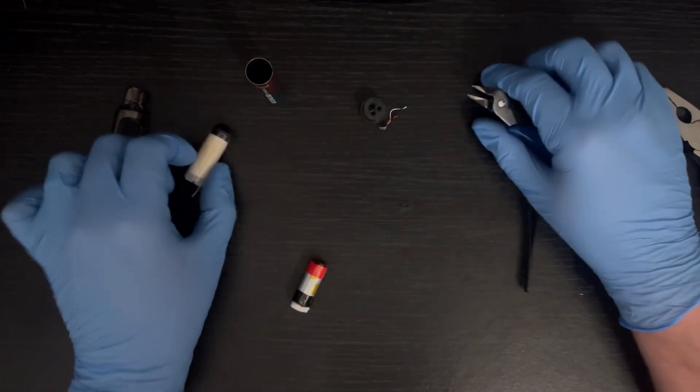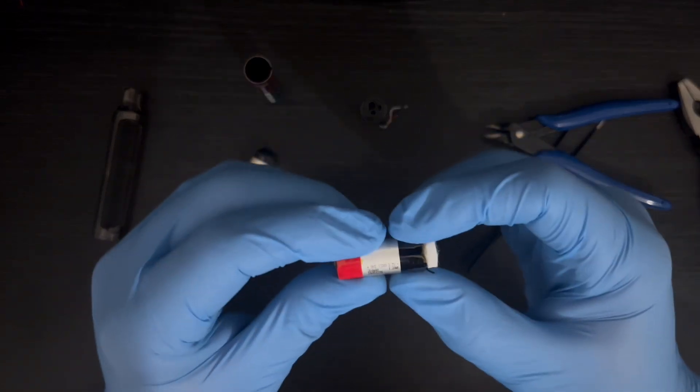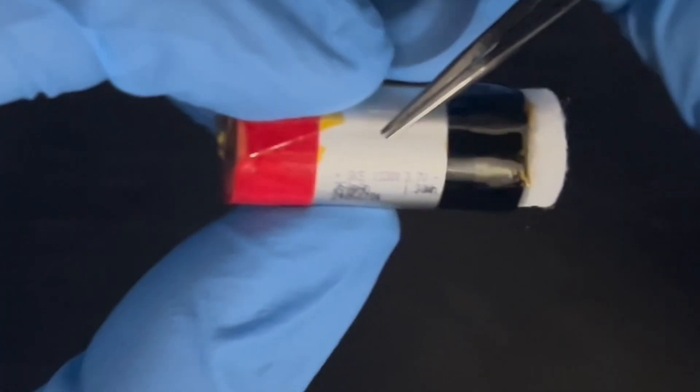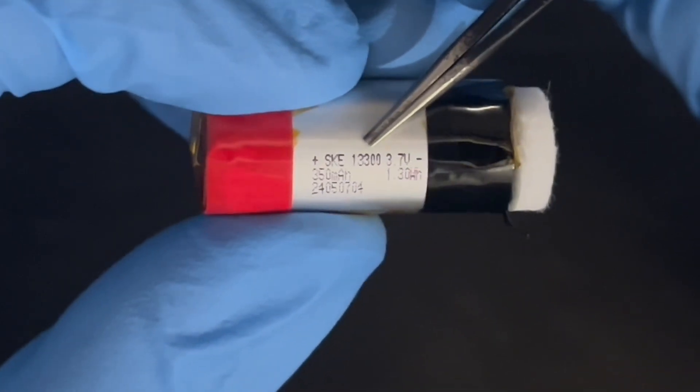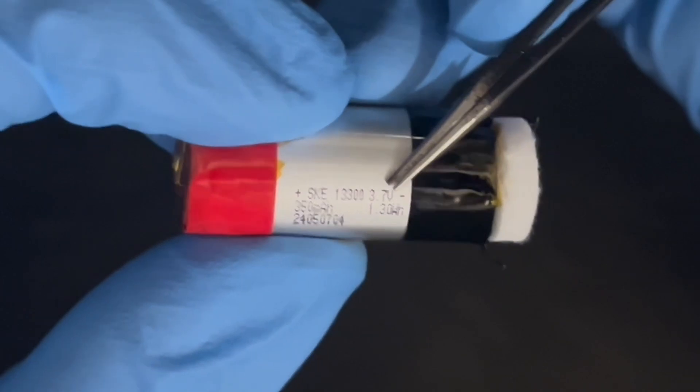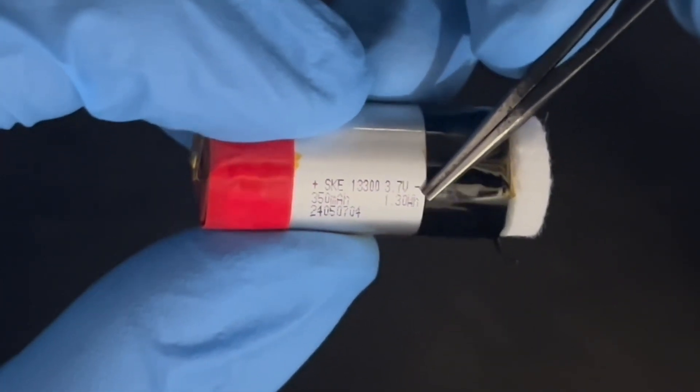There we go. So I'll come back to the tank in a minute. While I've got the battery, let's do the battery first. So it is an SKE branded battery. It's a 13300, 3.7 volts at 1.30 watt hours.